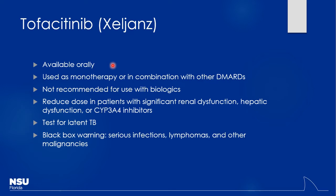If they have severe renal or hepatic dysfunction, you may need to adjust the dose. If they have CYP3A4 inhibitors on board — like verapamil or erythromycin — you'll need to drop the dose, otherwise you could see too much myelosuppression. This is another one where you definitely want to test for latent TB first. Black box warnings include serious infections, possible risk for lymphomas, and other malignancies.